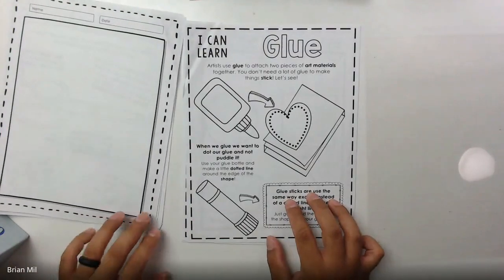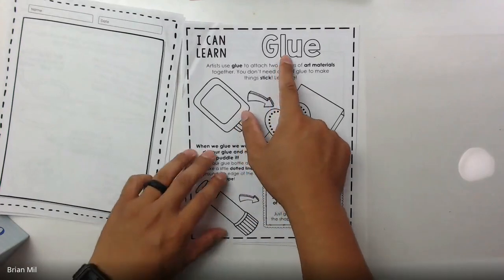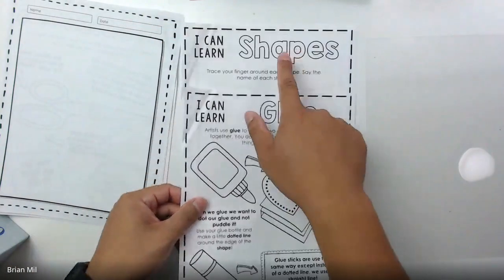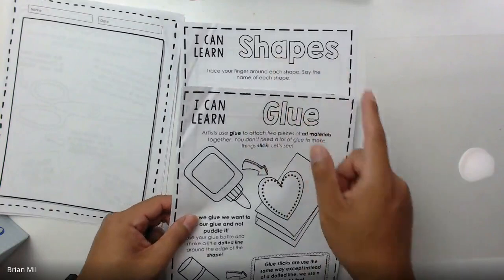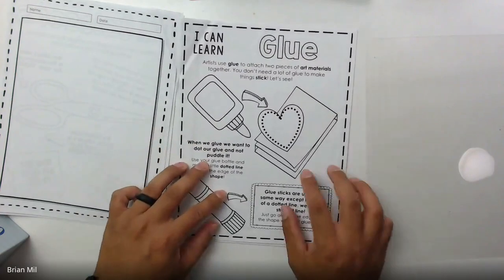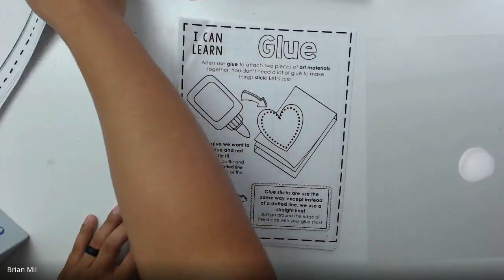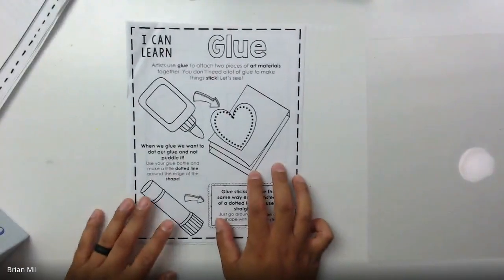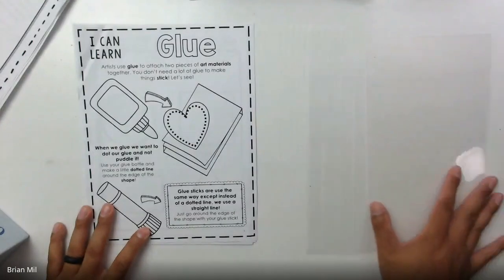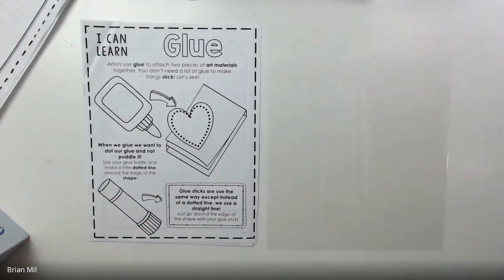Today I do want to talk about two things: I want to talk about glue and I also want to talk about shapes. But first let's talk about glue and we're going to be using our imagination for how glue works.